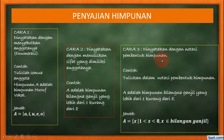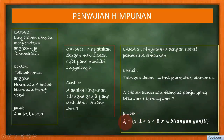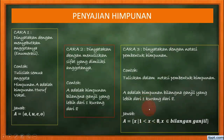Yang ketiga, dinyatakan dengan notasi pembentuk himpunan. Di sini yang sering sekali membuat bingung adalah notasi pembentuk himpunan. Contoh: tulislah dalam notasi pembentuk himpunan — A adalah himpunan bilangan ganjil yang lebih dari 1 kurang dari 8. Kita tulis: A sama dengan kurung kurawal X, di mana X lebih besar dari 1 tapi lebih kecil dari 8, X anggota bilangan ganjil. Dibaca: A sama dengan X, di mana X lebih besar dari 1, tapi X lebih kecil dari 8, X anggota bilangan ganjil. Berarti bilangan ganjil yang lebih dari 1 kurang dari 8, X-nya adalah 3, 5, 7.